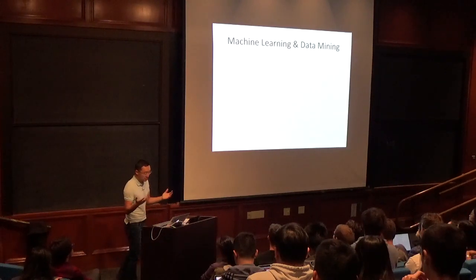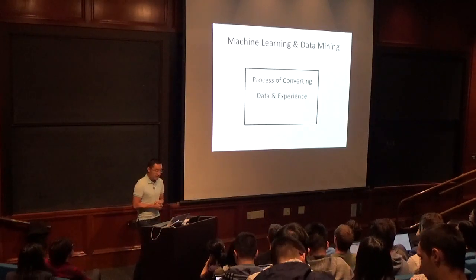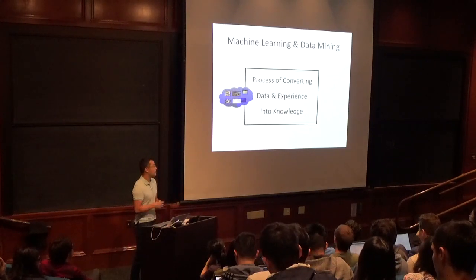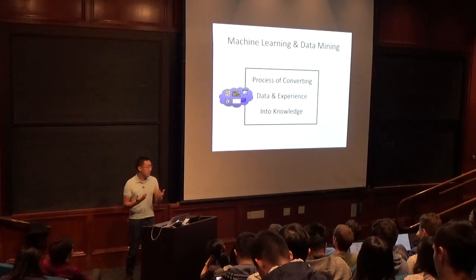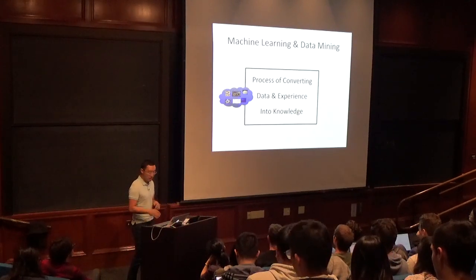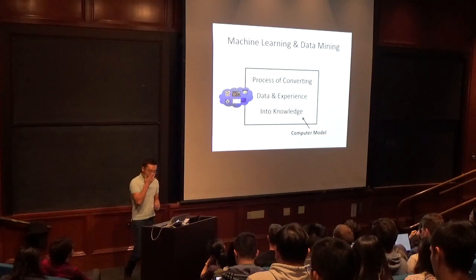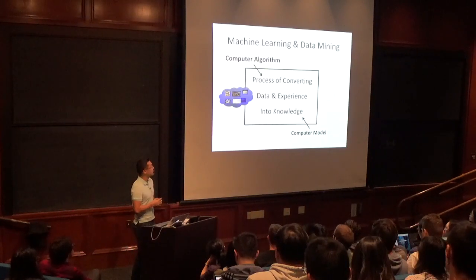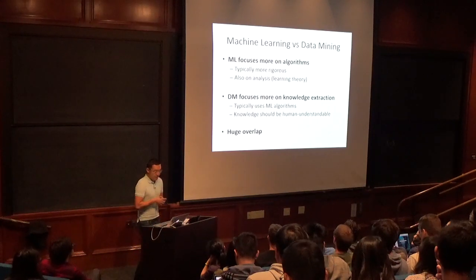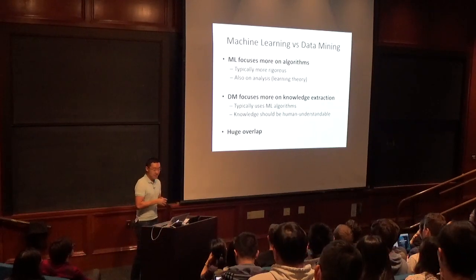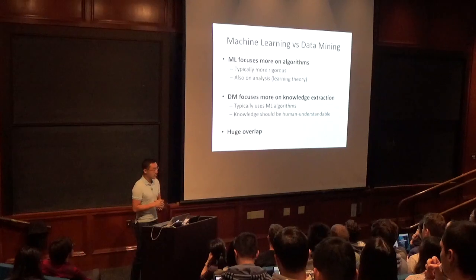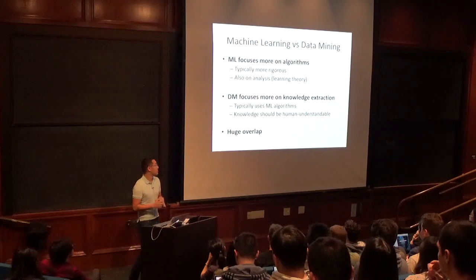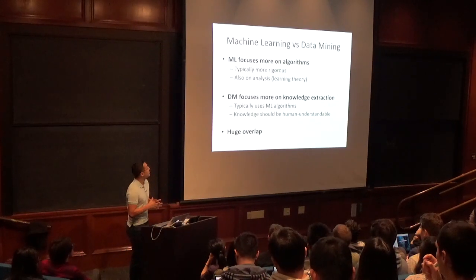Machine learning and data mining is the process of converting data and experience into knowledge. Data are the inputs, knowledge is a computer model, and the process is an algorithm — that's the nuts and bolts. This class will touch on both machine learning and data mining, which largely use the same set of tools with huge overlap.